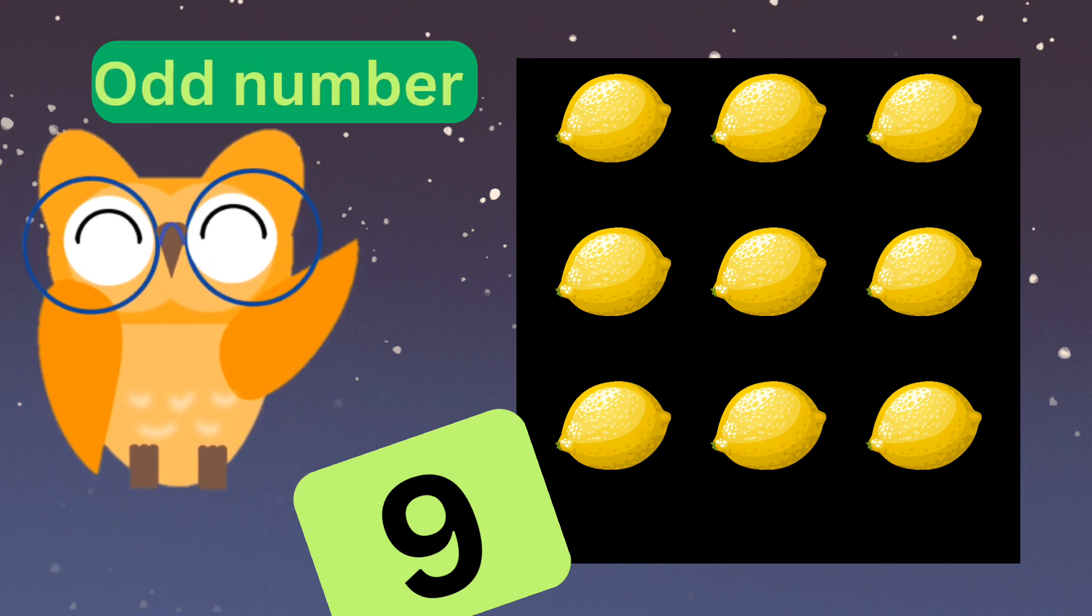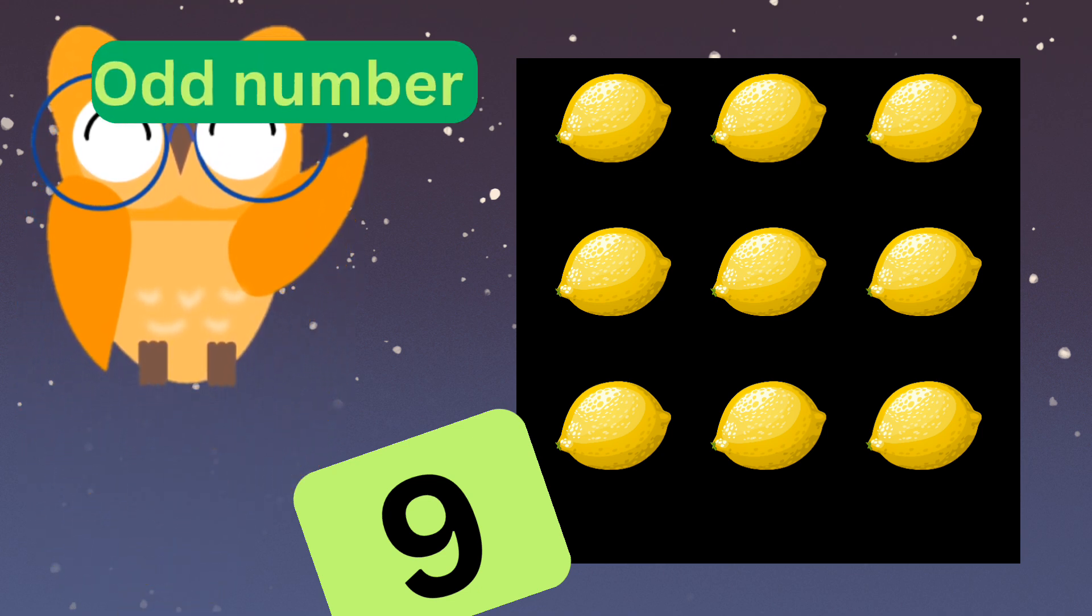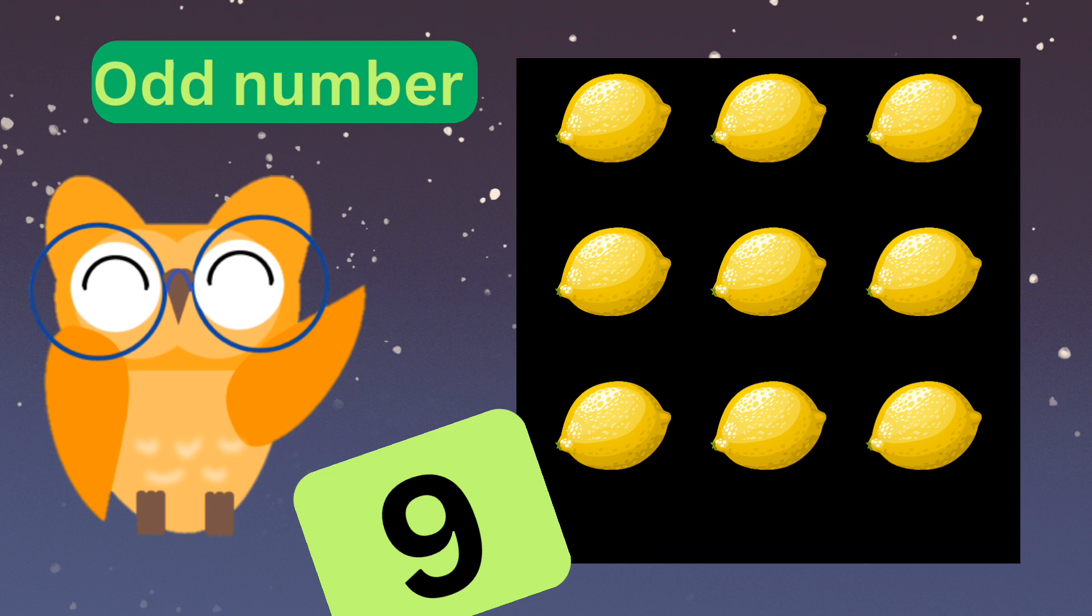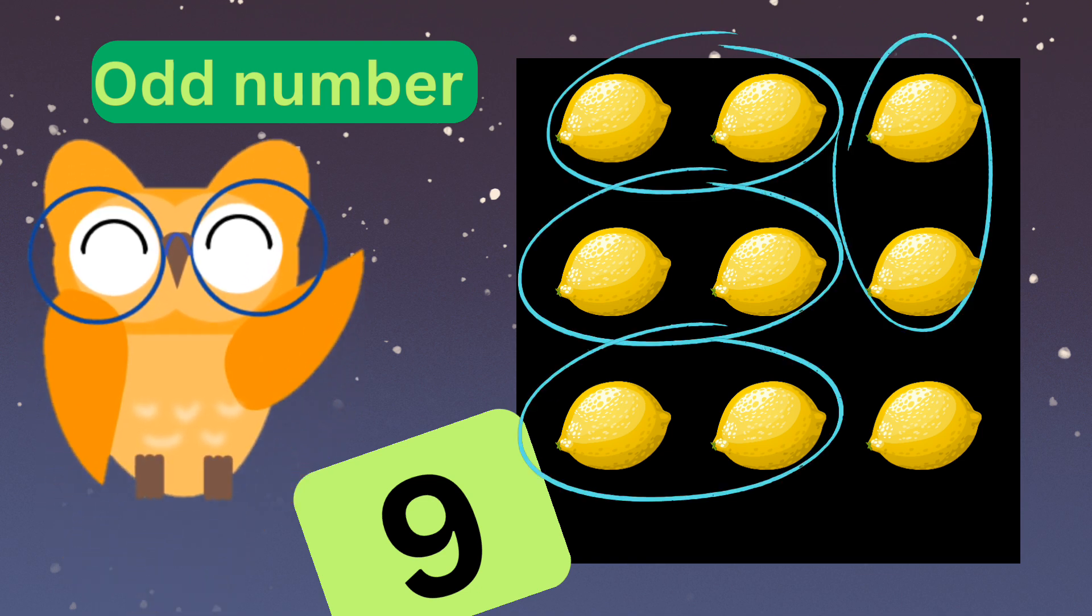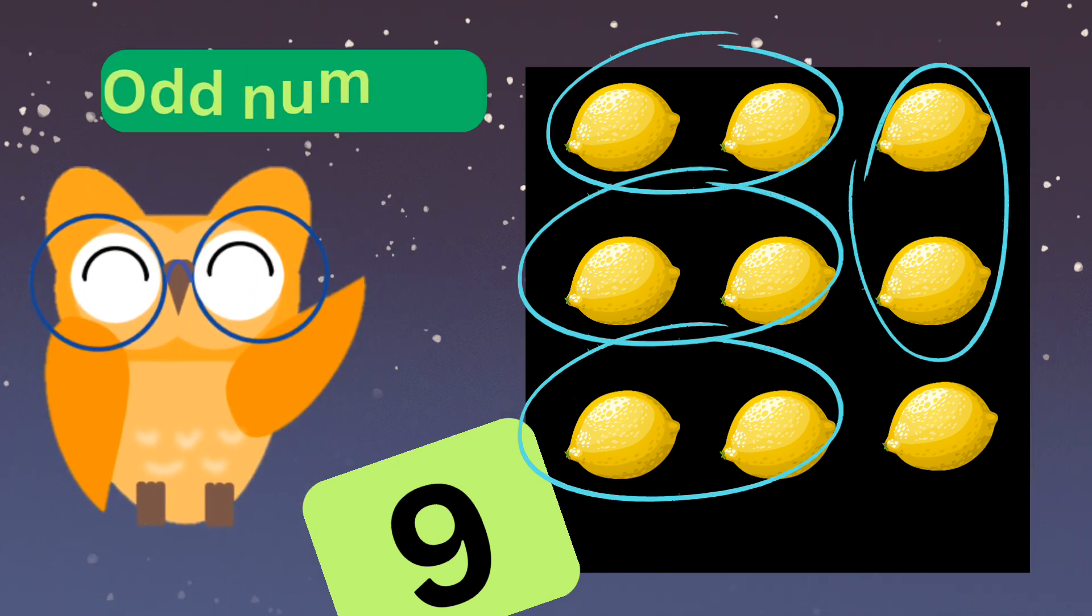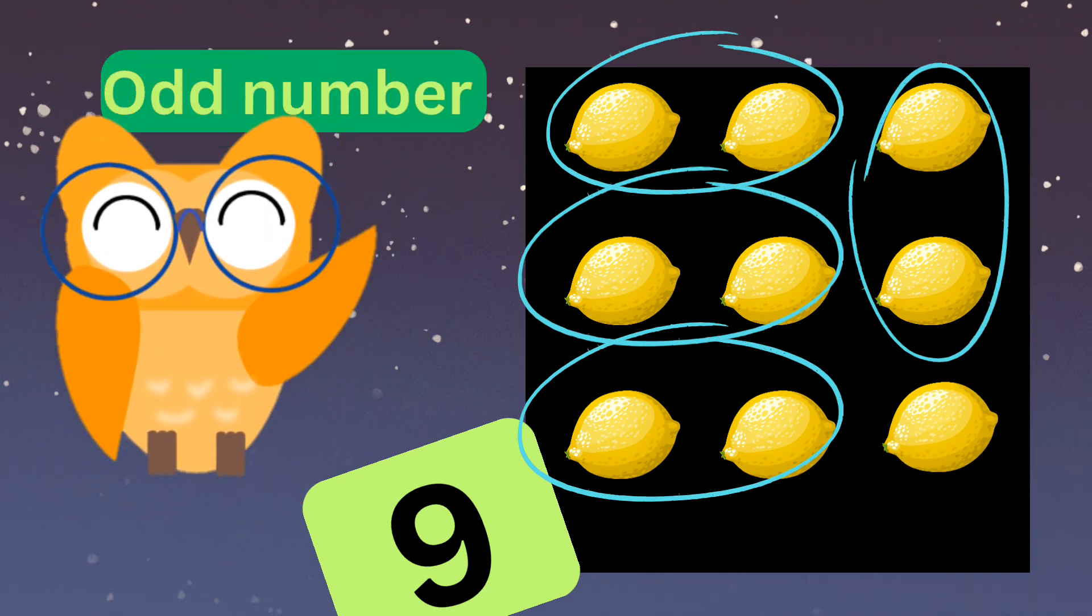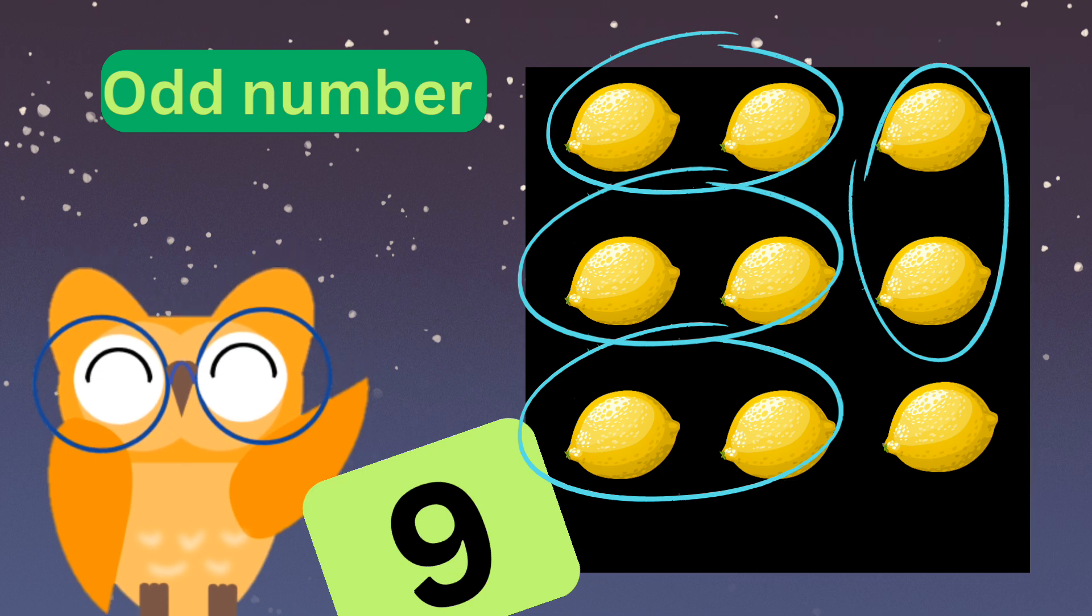Look, there are nine lemons. We're going to make groups of two to see if there will be any lemons left over. One group here, another one here, there's one right here, and the last one here. Ah, there is one lemon left over! We have grouped nine lemons and there's one lemon left over, so we say that nine is an odd number.